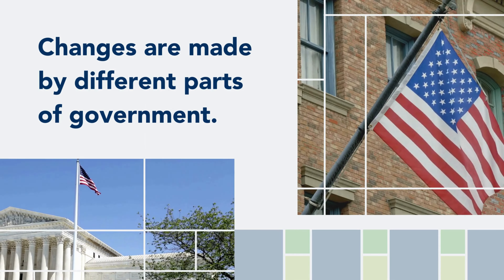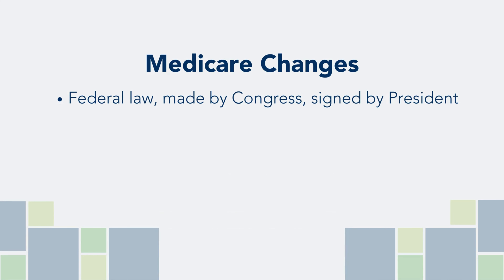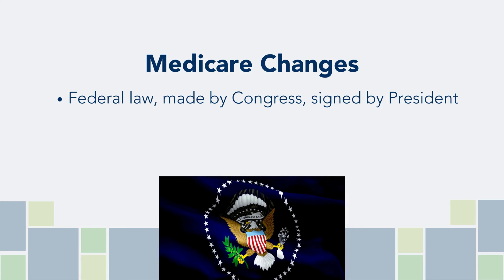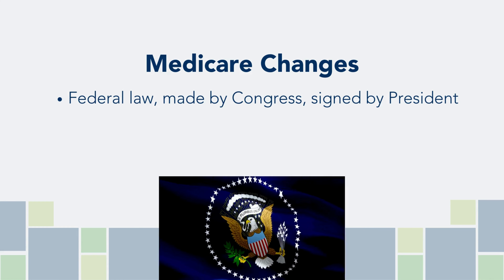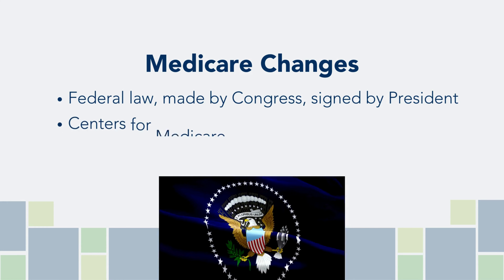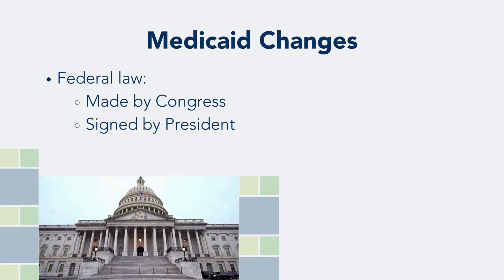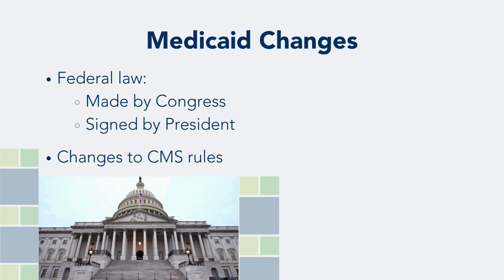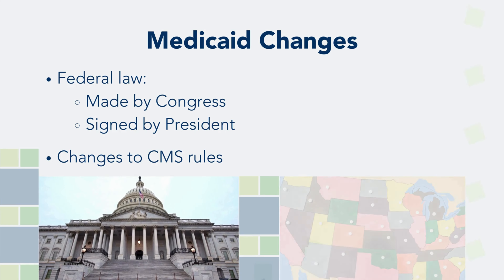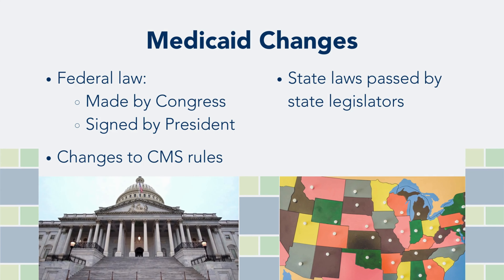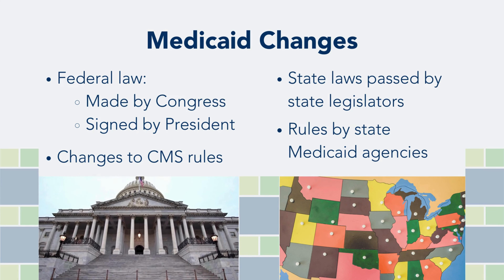Additionally, changes to the programs are made by different parts of government. Medicare changes can be the result of changes to federal law made by Congress and signed by the president, or the result of changes to rules that interpret and implement the law by the Centers for Medicare and Medicaid Services, called CMS. Changes to Medicaid policies can be the result of changes to federal law, to CMS rules, or the result of changes to state laws passed by state legislators or by rules issued by state Medicaid agencies.